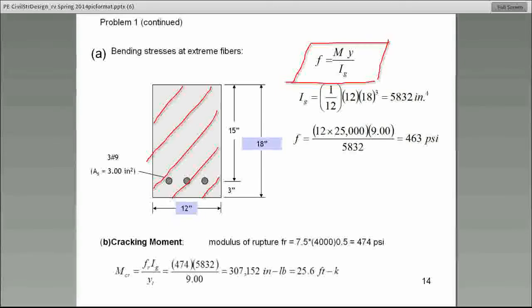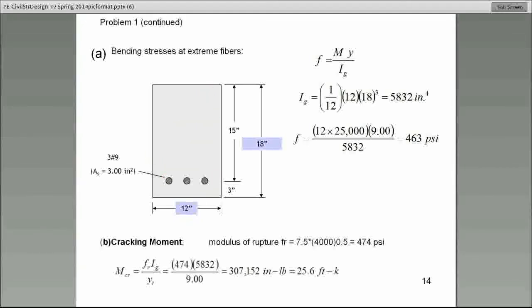One over twelve times B times H cubed. I guess I cannot. I did it. So, the moment of inertia here, I is one twelve times B is the base. We have the base, which is twelve. H, in this case, we are using eighteen, the entire depth. And, that's what we mean, this will be the gross.